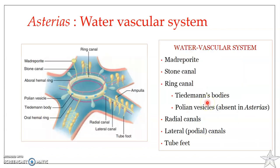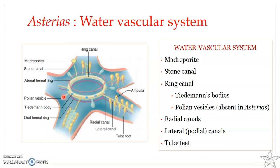Polian vesicles, though absent in Asterias, are pear-shaped, thin-walled contractile bladders situated along the inter-radii. Unlike Tiedemann's bodies which open from the inner side, polian vesicles open into the ring canal from the outer side. Their function is to regulate the hydraulic pressure within the water vascular system.